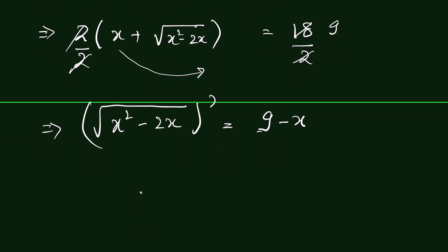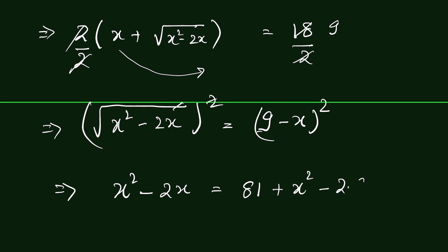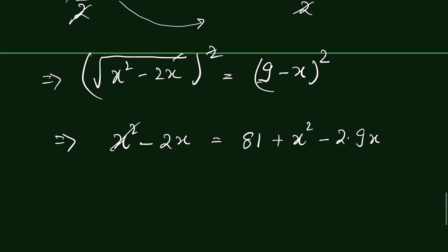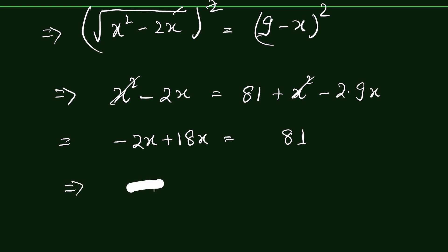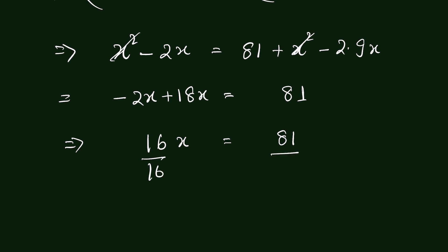Now squaring both sides: x² minus 2x equals (9 minus x)², which expands to 81 minus 18x plus x². The x² terms cancel on both sides, leaving minus 2x equals 81 minus 18x. Rearranging: 18x minus 2x equals 81, so 16x equals 81. Dividing both sides by 16 gives x equals 81 upon 16.